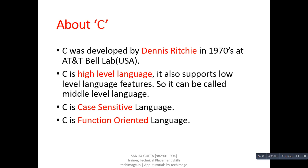C is considered as high level language but it also supports low level language features. So, combinedly we can call it a middle level language.